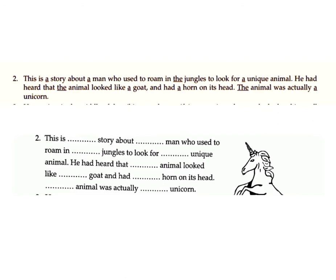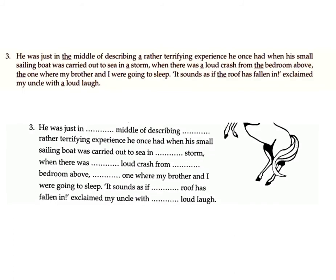Paragraph 2: 'This is a story about a man who used to roam in the jungles to look for a unique animal. He had heard that the animal looked like a goat and had a horn on its head. The animal was actually a unicorn.'